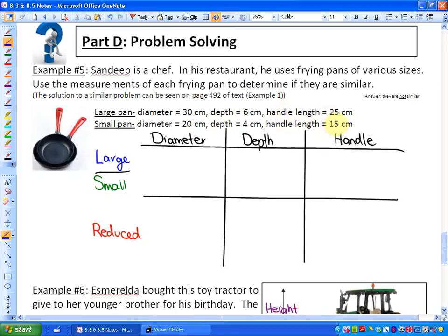There are multiple ways to find out if these are similar, but we have to see if the corresponding parts are proportional. I'll show you two methods. One method is to look at the proportions of the corresponding parts. I've set up a table here. The large diameter over the small diameter would be 30 over 20, which reduces to 3 over 2.